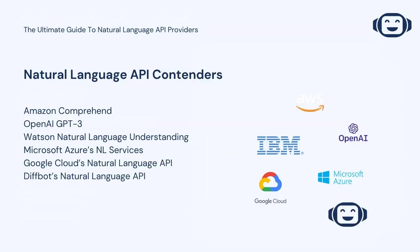So, who are some of the major players in natural language APIs? Unsurprisingly, some big tech names are present. There are many other organizations who have also created non-commercially available NL APIs, but in this guide we're going to look at commercially available tools. In particular, we'll look at the following heavily benchmarked offerings, including Amazon Comprehend, OpenAI's GPT-3, Watson Natural Language Understanding, Microsoft Azure's NL Services, Google Cloud's NL API, and DiffBot's NL API.